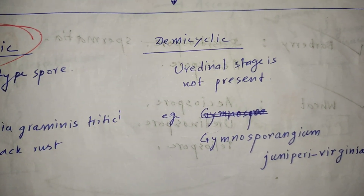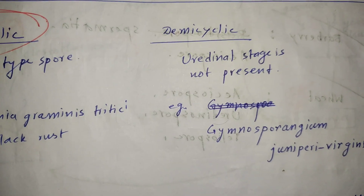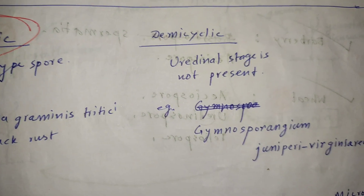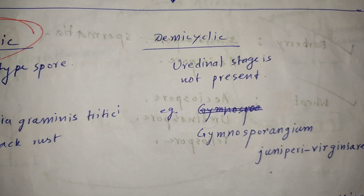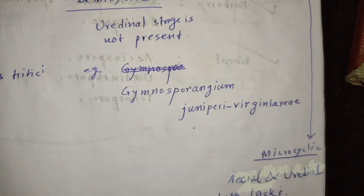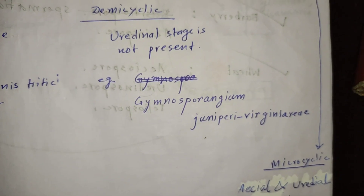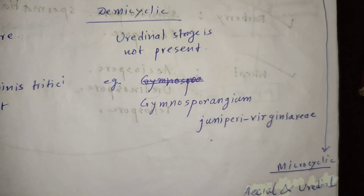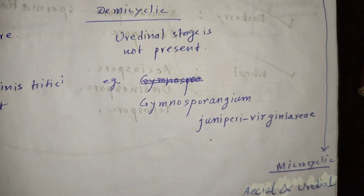Those rust fungi which can show up to 4 types of spores but lack only the uredinal stage are called as having a demicyclic life cycle. The example is the cedar apple rust fungus.